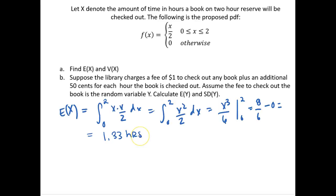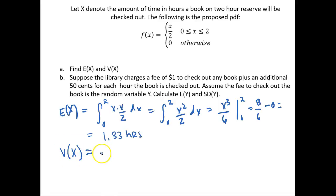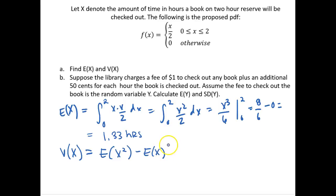That result is simply 1.33 hours, so we would expect on average that the book would be checked out for 1.33 hours. Now, what is the variance of x? The variance is always the expectation of x squared minus the expectation of x, quantity squared.